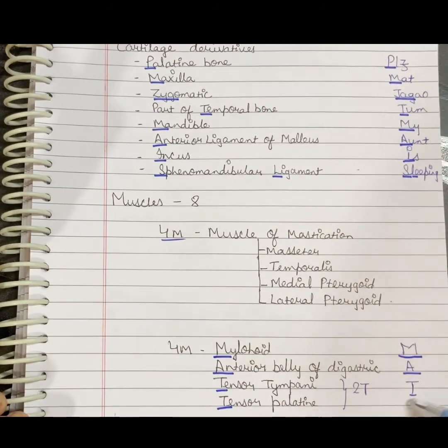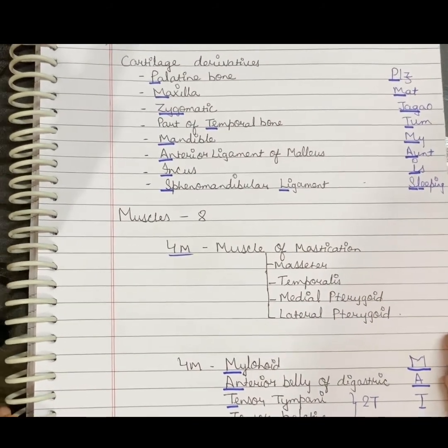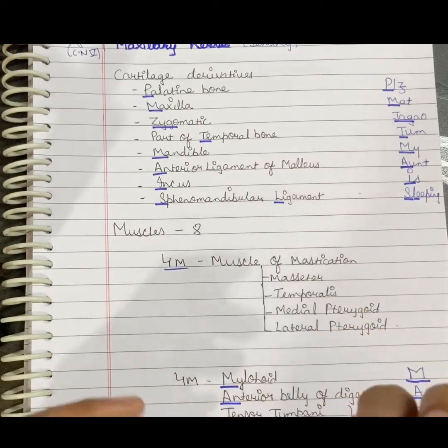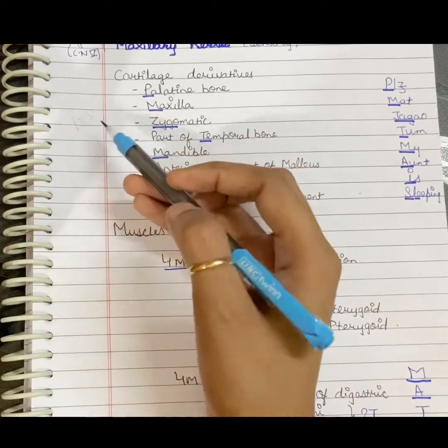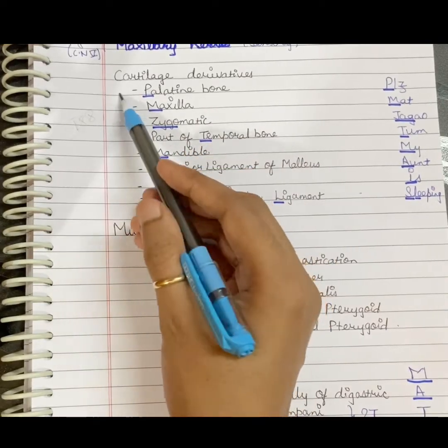In summarizing all, we can remember it as 1, 1, 8, 8. The first pharyngeal arch has eight cartilage derivatives.